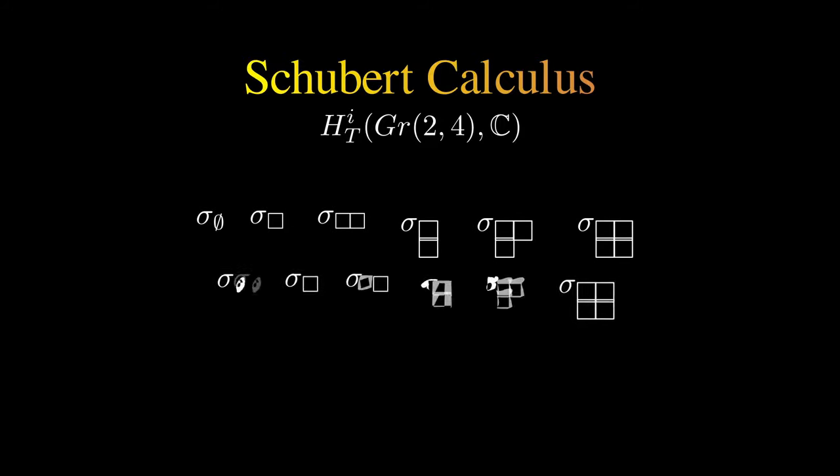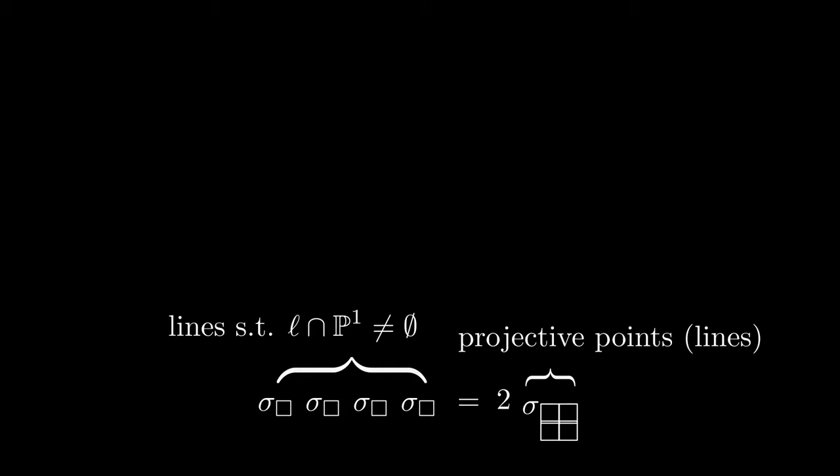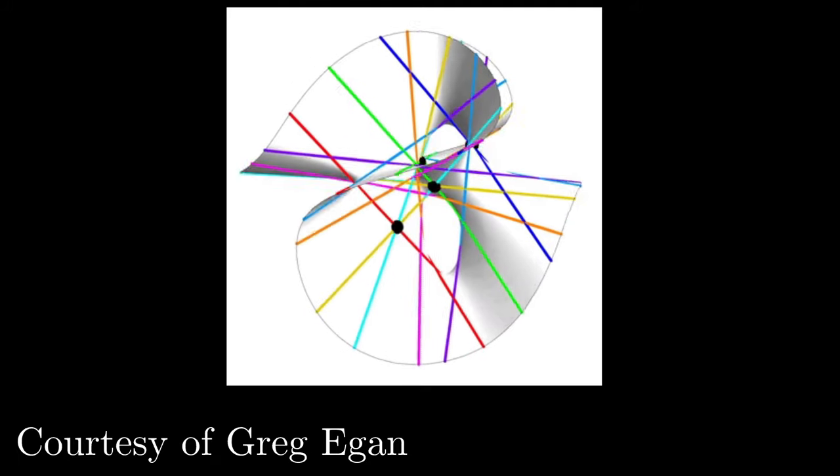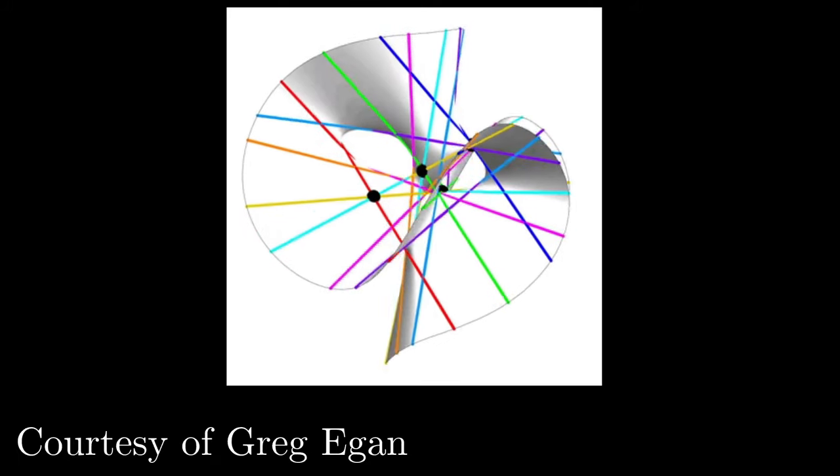Schubert calculus attempts to understand the intersections of various geometric objects, and you can answer amazing questions like how many lines lie on an arbitrary cubic surface, and the answer somehow being 27.